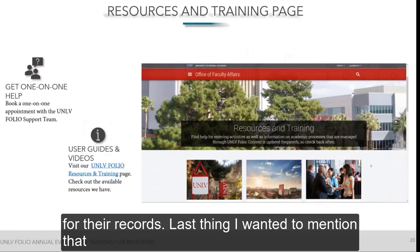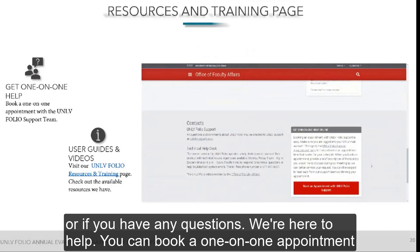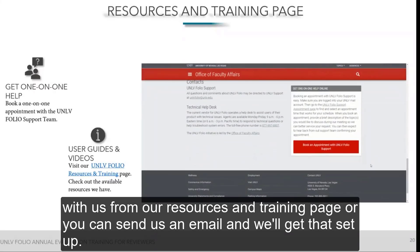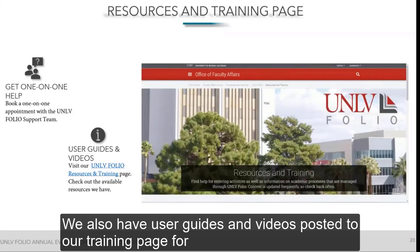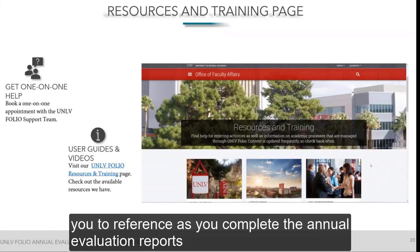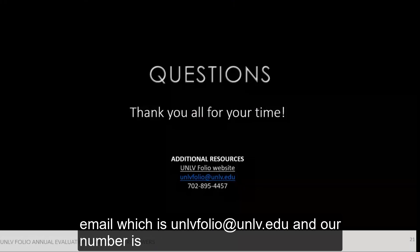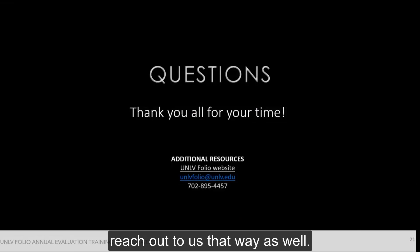You can get one-on-one help if you get stuck at any time with UNLV Folio or have questions — we're here to help. You can book a one-on-one appointment from our resources and training page, or send us an email to get that set up. We also have user guides and videos posted to our training page for you to reference as you complete the annual evaluation reports and sign-offs. Our UNLV Folio email is unlvfolio@unlv.edu and our number is 702-895-4457.